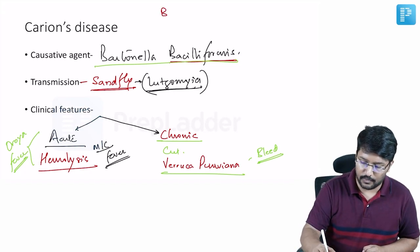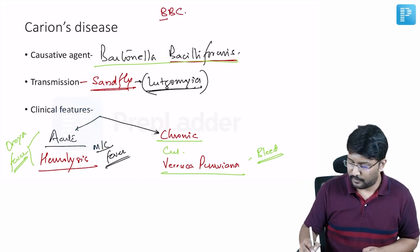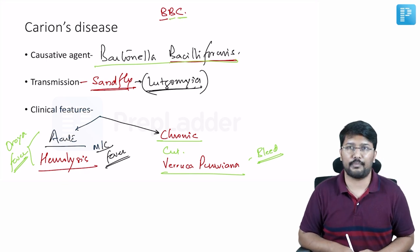You can simply remember with the mnemonic BBC, where Bartonella basilliformis causes Carion's disease, BBC.